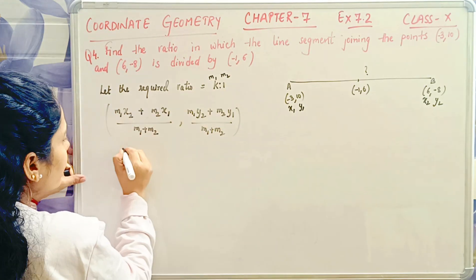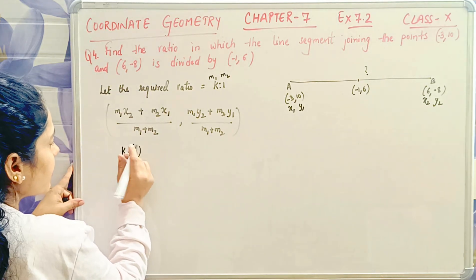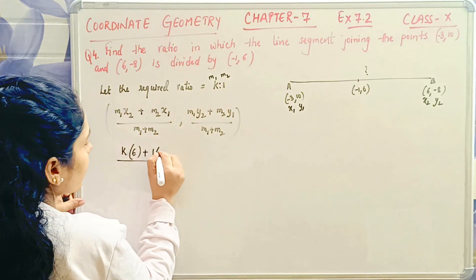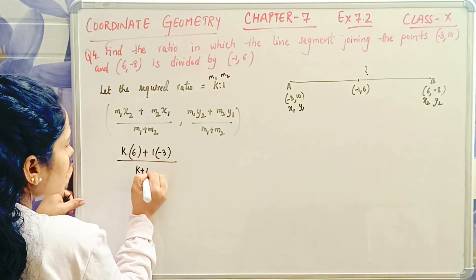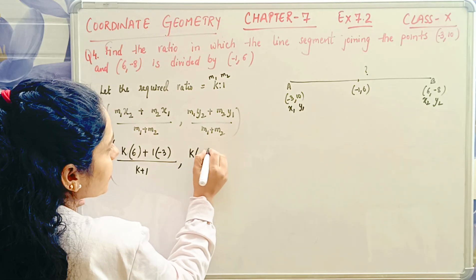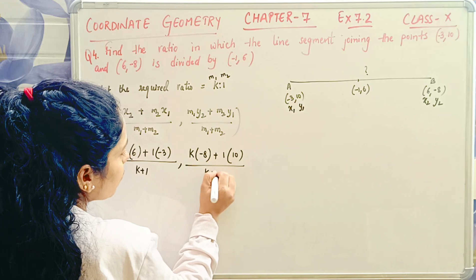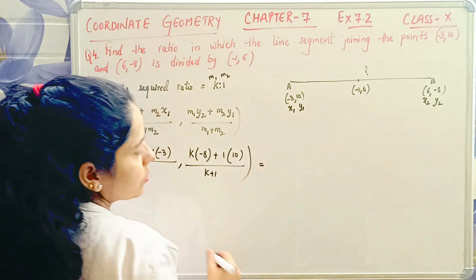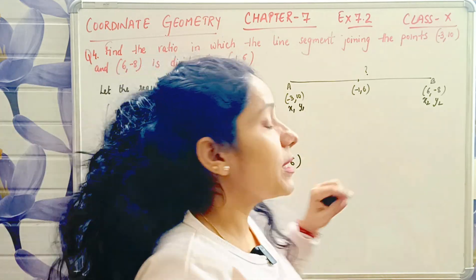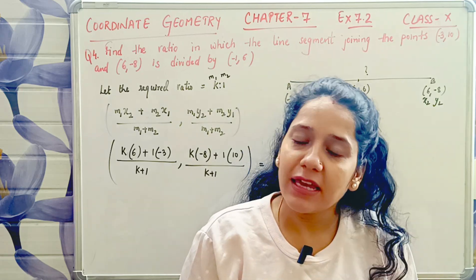m1 is k. x2 is 6, so k into 6. Plus m2 is 1, x1 is -3, divided by k plus 1. Again, m1 is k, y2 is -8, plus m2 is 1, y1 is 10, divided by k plus 1. Equal to (-1, 6), because the line divides at (-1, 6), so it equals that.